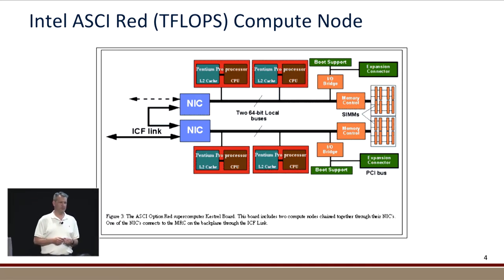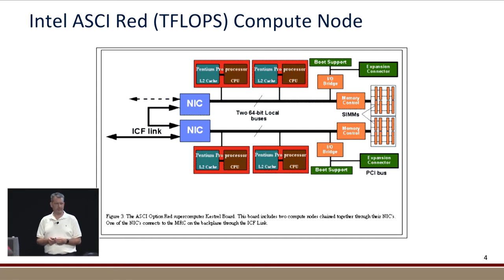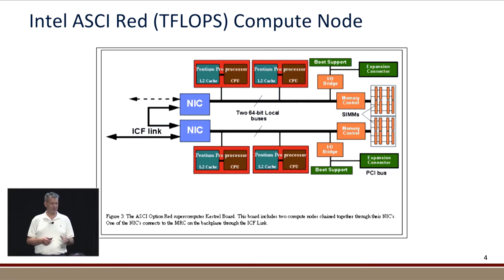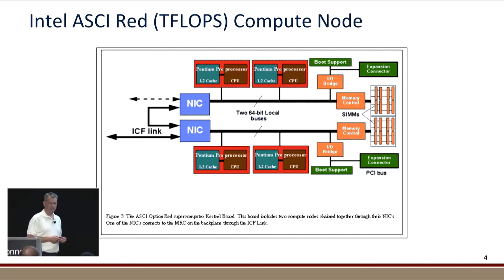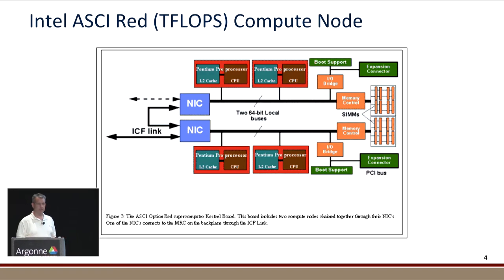That work followed into the Intel ASCII Red — what Intel called their TFLOPs machine because it was the first teraflop machine, deployed December 1996 at Cornell Oaks in Beaverton. A compute node of the TFLOPs machine was a board with two Pentium Pros on it, with the NIC directly connected to the memory bus. This was the MPP architecture we were dealing with.